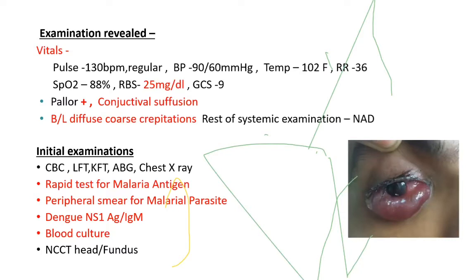On examination: hypoglycemia with very low blood sugar, SPO2 of 88%, high-grade fever with hypotension, pallor, conjunctival suffusion, and bilateral coarse crepitations. Initial battery of tests sent included CBC, LFT, KFT, ABG, chest X-ray, rapid test for malaria antigen, thick smear for malaria, dengue NS1 antigen and IgM (since it was day 5 fever), blood culture, and NCCT head.